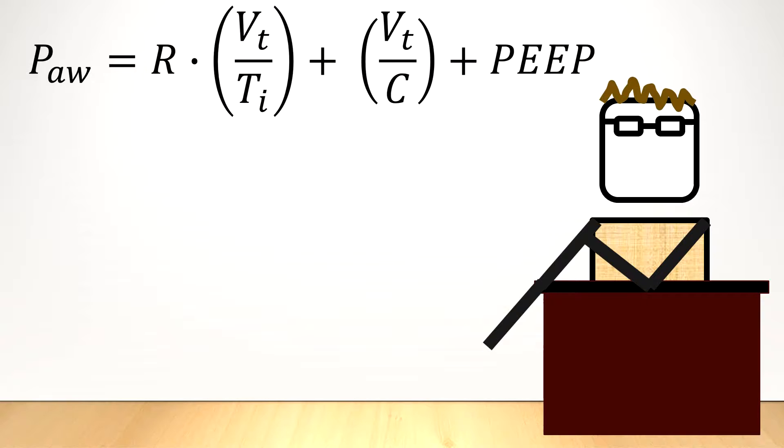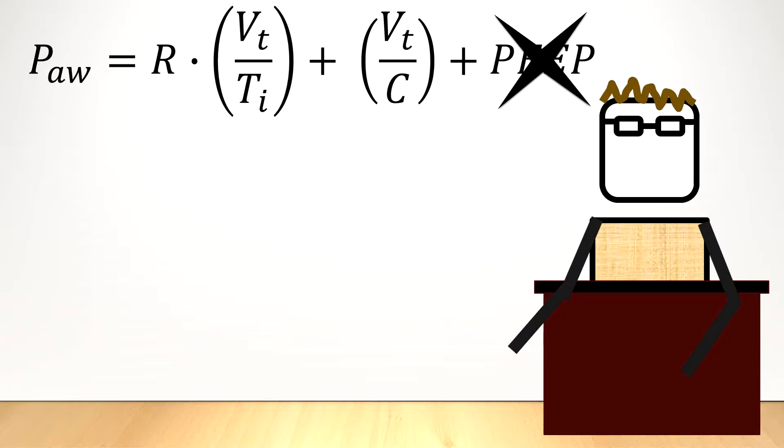Now getting rid of the peep part is pretty easy. You can either just subtract it, or you can set the zero on the ventilator for peep, and that issue is now gone. In reality, we rarely actually worry about the peep part, unless there happens to be a lot of intrinsic peep, which is a topic of a separate conversation.